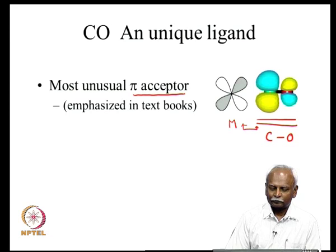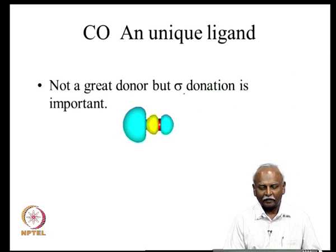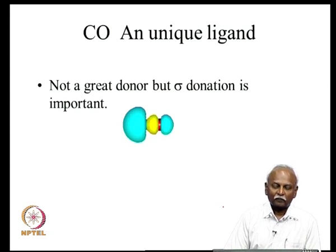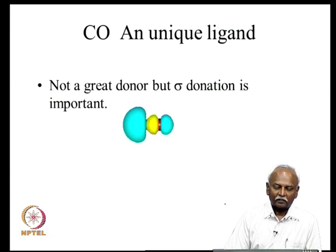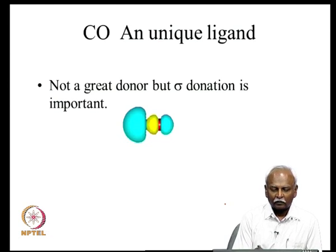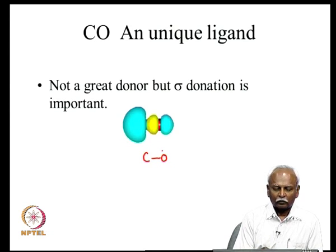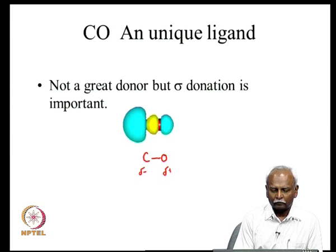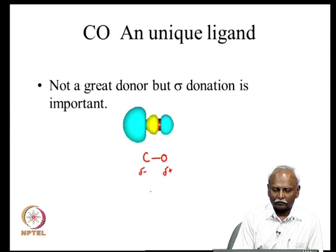What is often ignored is the fact that carbon monoxide is also a good sigma donor. This donation comes from the sigma orbital of carbon monoxide, which is also located primarily on the carbon. So the carbon end of carbon monoxide turns out to be the negative end of the dipole — carbon monoxide occupies a special place because this carbon end is negative.